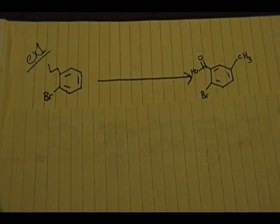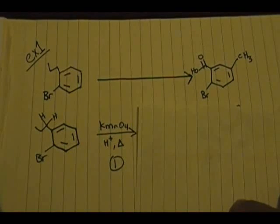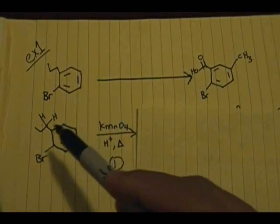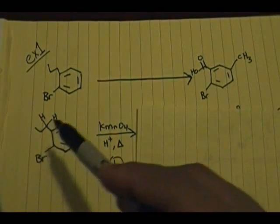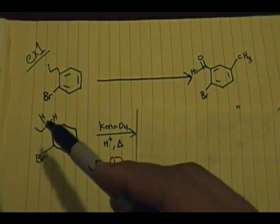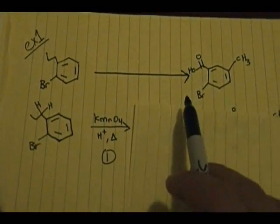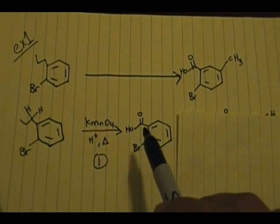I did this in two steps, and most of you might have different synthetic pathways — that's perfectly alright, as long as your pathway makes sense. For the first step, I used potassium permanganate (KMnO4), H+, and heat to change the alkyl group to a carboxylic acid. This follows the criteria that the carbon directly connected to the aromatic ring must have at least one hydrogen present. The product from this step is a carboxylic acid at that position.